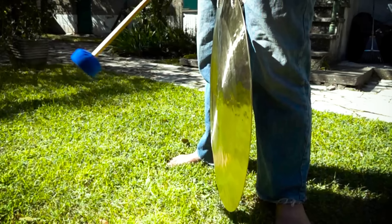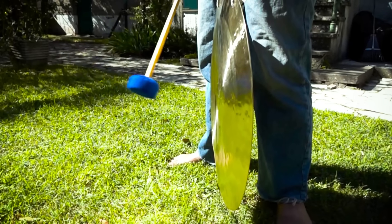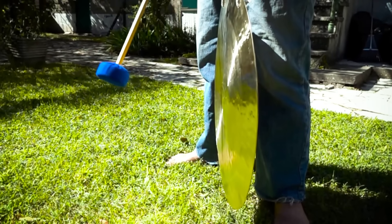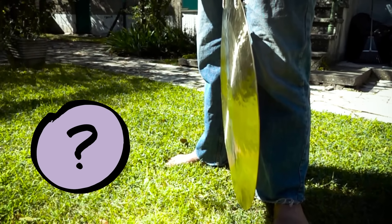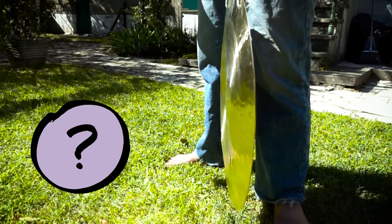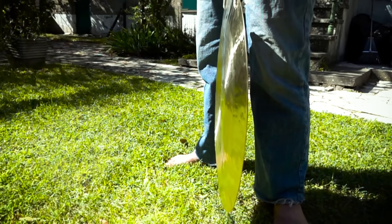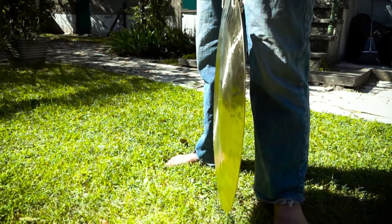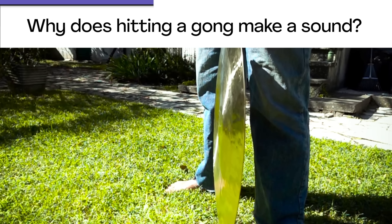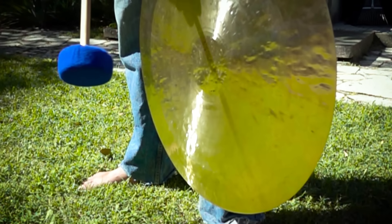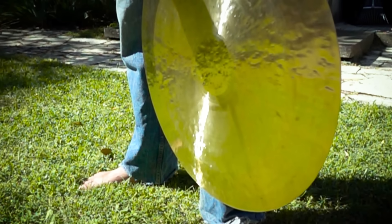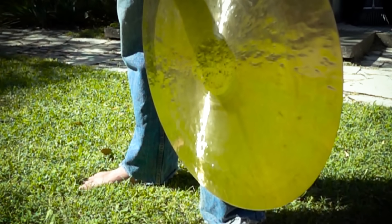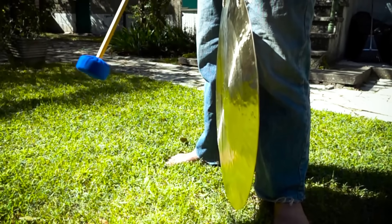Let's see if we can figure out what's going on. Watch the gong again. How did the gong change after the mallet hit it? Why do you think hitting a gong makes sound? Now would be a good time to pause the video and discuss. Okay, are you ready? Maybe you notice that the gong shakes when it's struck. If you put your hand near the gong, you might feel it shaking too.